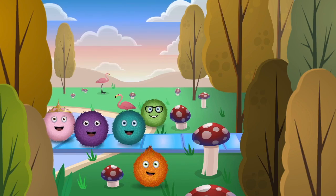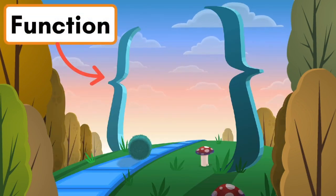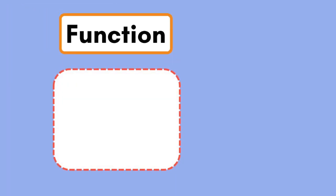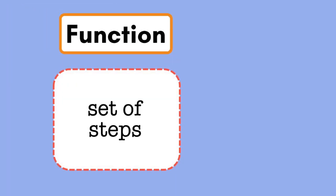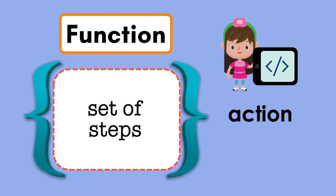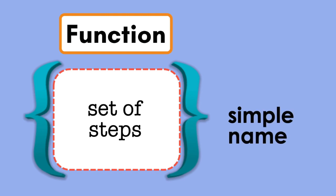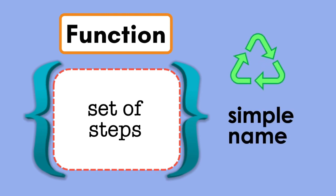Woohoo! Let's go! Your coding mission today is all about functions. A function is a block of code made up of a set of steps that result in a single specific action. A programmer — that's you — will give this action a simple name, so the set of steps can be easily repeated and reused again and again in your program.